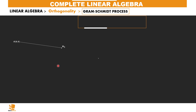Say we have a base made of only one vector U1. This base is already an orthogonal base, so we can say the resulting orthogonal vector is V1 which equals U1. Now say we have another base made of two vectors U1 and U2 which aren't orthogonal. We shall make use of the orthogonal projection to obtain a vector orthogonal to U1 such that that vector and U1 will form an orthogonal base.